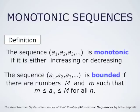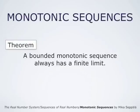Furthermore, the sequence A1, A2, A3 and so forth is bounded if there are numbers capital M and small m such that small m is at most AN, and that is at most capital M for all indices N. We have an important result which states that a bounded monotonic sequence always has a finite limit.